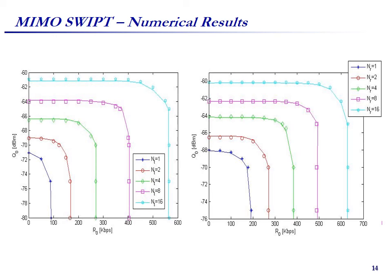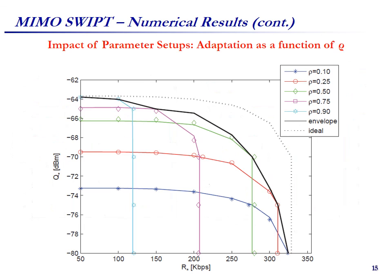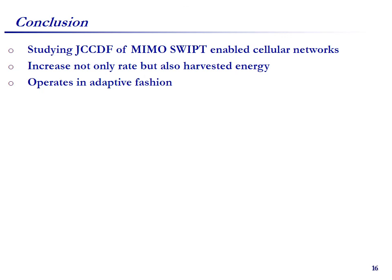Now we move to the numerical results. We see that by increasing either the number of transmit or receive antennas, the feasibility region extends significantly. We also show results when the receiver can adaptively select the optimum value of power splitting ratio for each pair of rate threshold R-star and energy threshold Q-star. From the figure, we see that the adaptive envelope is very close to the ideal one. Finally, in this work we study the joint CCDF of MIMO SWIPT in a cellular network. We show that by using MIMO, we can enhance not only the information rate but also the harvested energy. We recommend the receiver operate in an adaptive fashion to achieve higher performance.